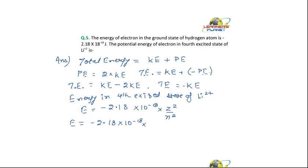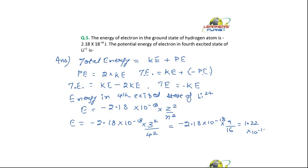What is your Z and N? Z of lithium is 3, and N is 4 (fourth excited state). So it would be 3² upon 4², giving −2.18 × 10⁻¹⁸ multiplied by 9 divided by 16. Computing 2.18 × 9 ÷ 16, we get 1.22 × 10⁻¹⁸.